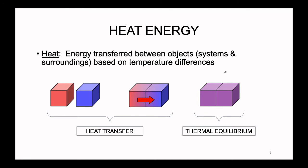What is heat? Heat energy is the energy transferred between objects — such as systems and surroundings — based on temperature differences. Heat energy is thermal energy; it gives off some type of infrared signature. If a hot object comes into contact with a cold object, the hot object will transfer its excess heat energy into the cold object. This is known as heat transfer.